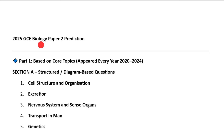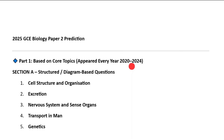In this year's Biology Paper 2 prediction for GCE, I've cut this prediction into two parts. Part one is based on core topics — topics that appeared every year from 2020 to 2024. The topics that have been appearing consistently in each and every paper from 2020 to 2024 have been considered to have high probability of being in the GCE Biology Paper 2.